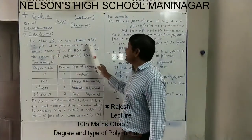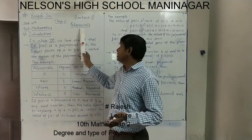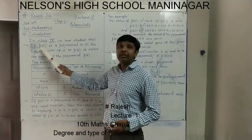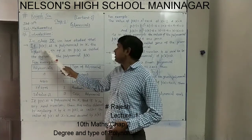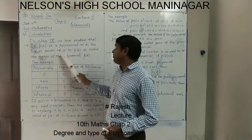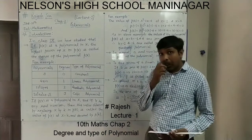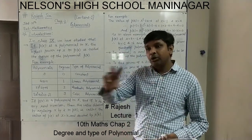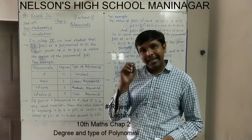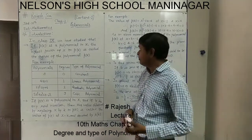In class 9 we have studied that if p(x) is the notation of the polynomial — p for polynomial, x the variable — so polynomial in the variable x. If p(x) is the polynomial in x, the highest power of x in p(x) is called the degree of the polynomial p(x). To determine the degree of the polynomial, we have to see which term has the highest power of x. That highest power is called the degree of the polynomial.